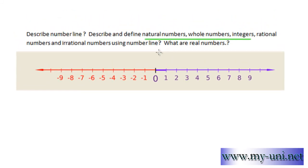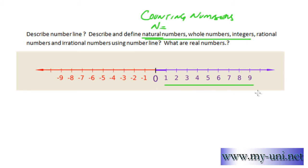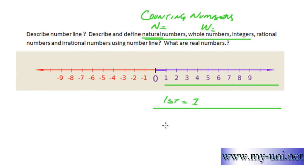Natural numbers, whole numbers, and integers — very simple concepts. Natural numbers are also known as counting numbers, represented by capital N. They start from one and go on indefinitely — there is no last natural number. If you include zero, then you're dealing with whole numbers, represented by W. Zero is the first whole number.